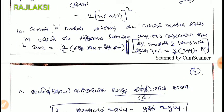Okay, natural number series — in which the difference between 2 consecutive terms. N by 2 times first term plus last term. Now, there are the sum of 3 terms in the series: 3, 6, 9. The first term is 3. Why 3 terms? I said 3.